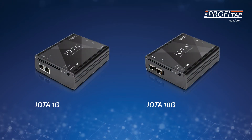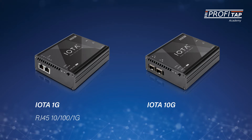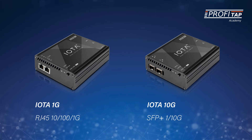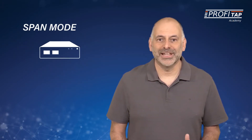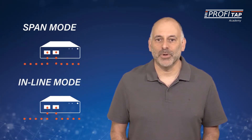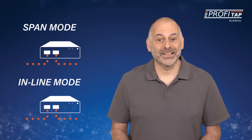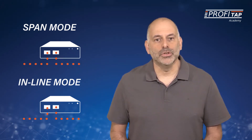Here we have the Profitap IOTA. There are two models available. One has RJ45 interfaces and supports 10, 100, and gigabit. The other has SFP plus cages and supports 1 gigabit and 10 gigabit interfaces. In both cases, the IOTA supports both span mode, which allows packets to be captured on both interfaces, and inline mode, which bridges the traffic between the two interfaces. The mode you use will depend on whether you're capturing traffic from a span port on a switch or placing the IOTA in line between two devices.